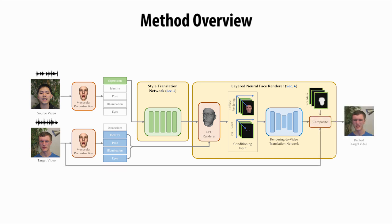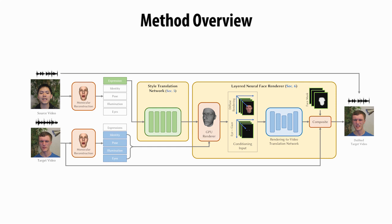We feed these conditioning inputs through a rendering-to-video translation network. The output of this network is composited onto the target video using a soft face mask. This produces a photorealistic rendering on dynamic video backgrounds. Finally, we copy the audio from the source video.